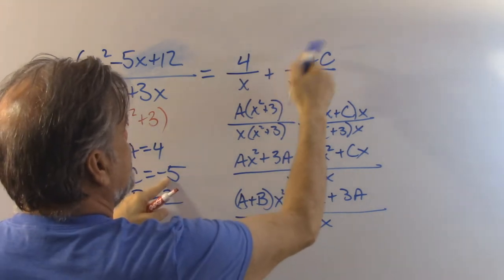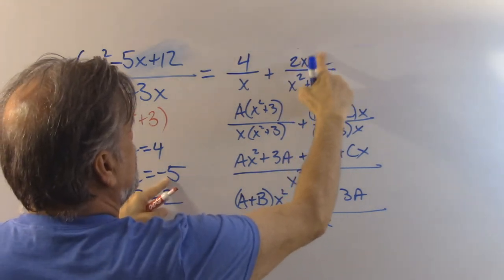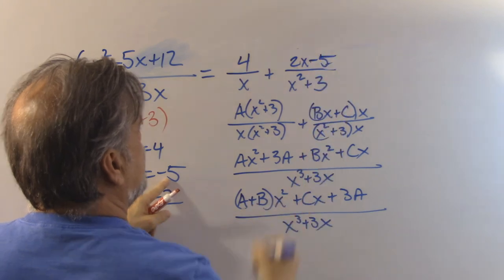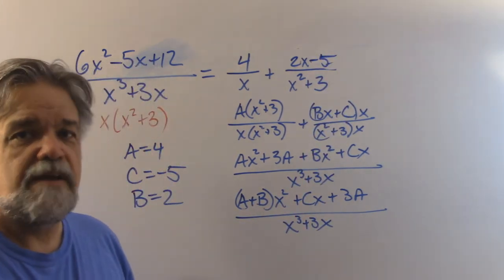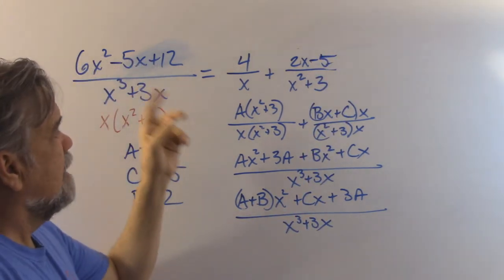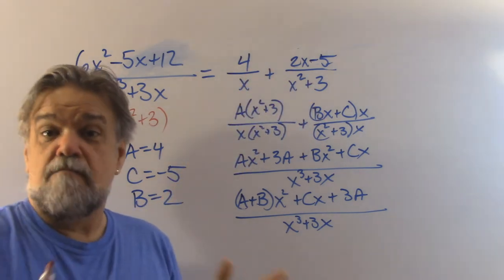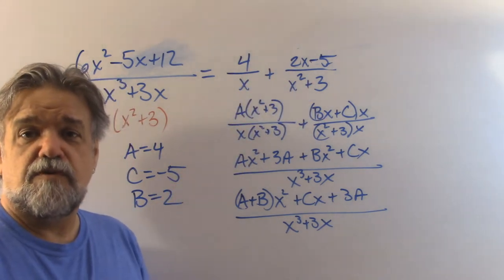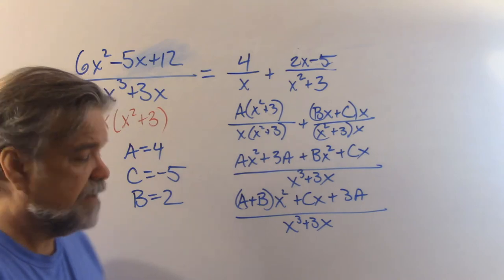So this is going to be 4 over x plus 2x minus 5 over x squared plus 3. It doesn't simplify as much as the ones we had before, but it's still pretty good.